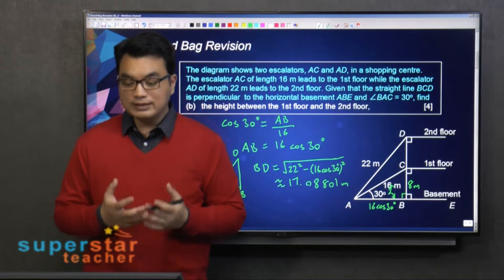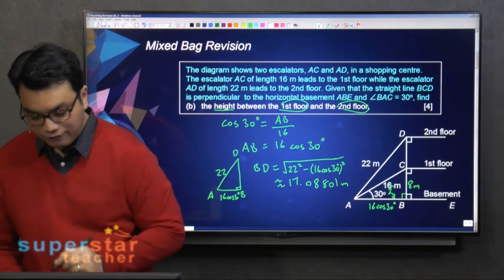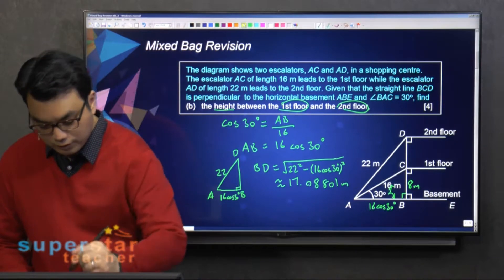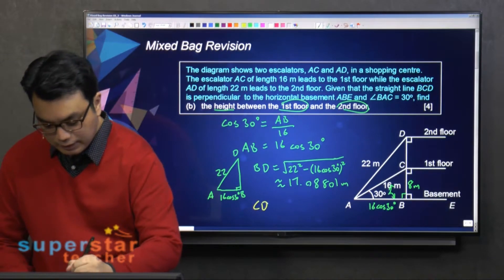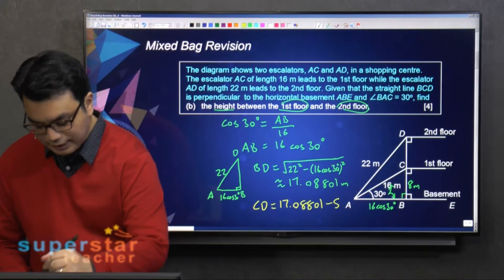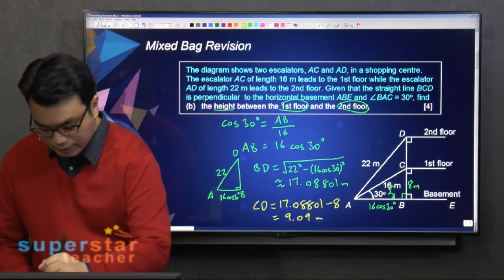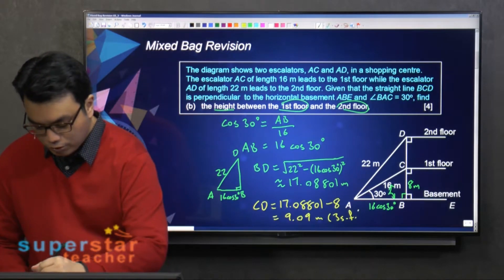And now we can find CD, which is the height between the first and the second floor. So CD equals 17.08801 minus 8. So it's 9.09 meters. Round it off to 3 significant figures.